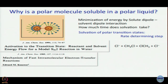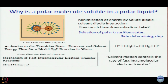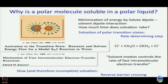Another paper published in 1985 by Kosower was on the mechanism of fast intramolecular electron transfer reactions. He made the comment: solvent motion controls the rate of fast intramolecular electron transfer. And if solvation is too slow, it may not be complete before the reaction takes place. If that is the case, you can have barrier crossing not only in the forward direction but also in the backward direction. How fast solvation is often determines the dynamics of reactions involving polar intermediates and polar transition states.